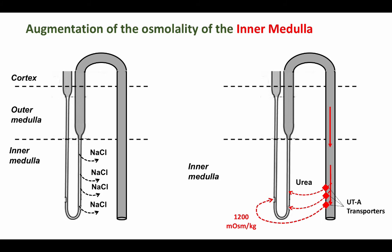Firstly, there is a role for sodium chloride. The thin ascending limb allows sodium chloride to passively diffuse into the medullary interstitium, but the processes by means of which this happens are not yet known.